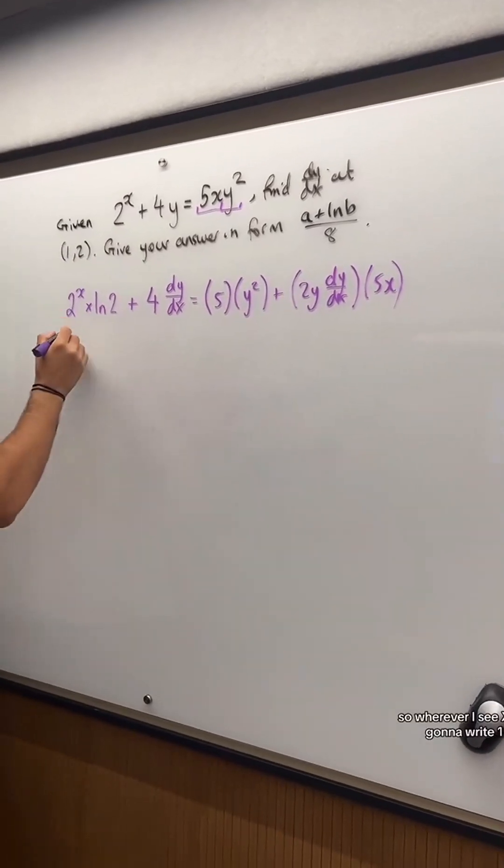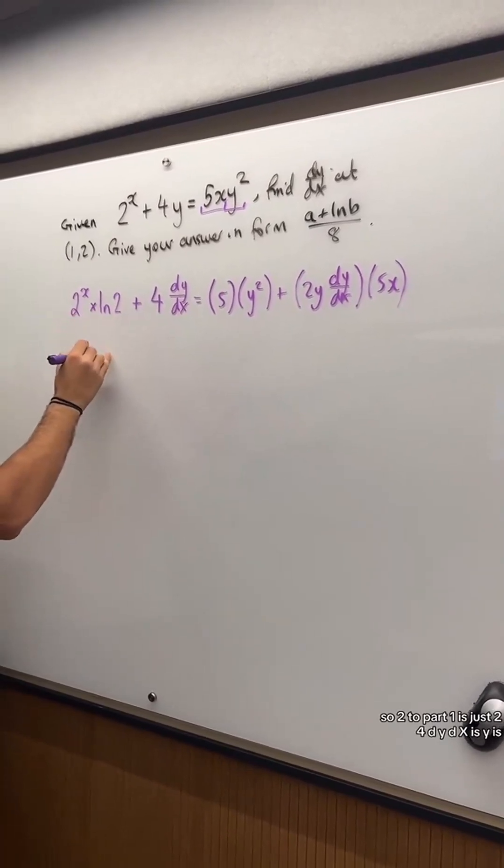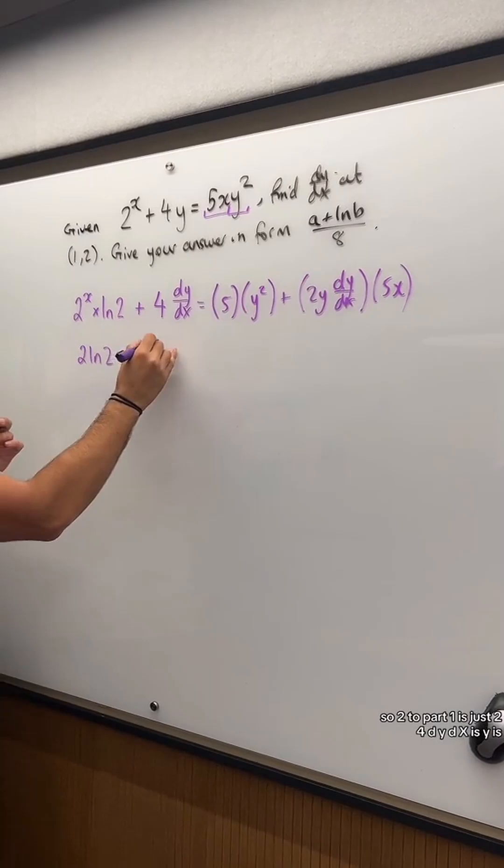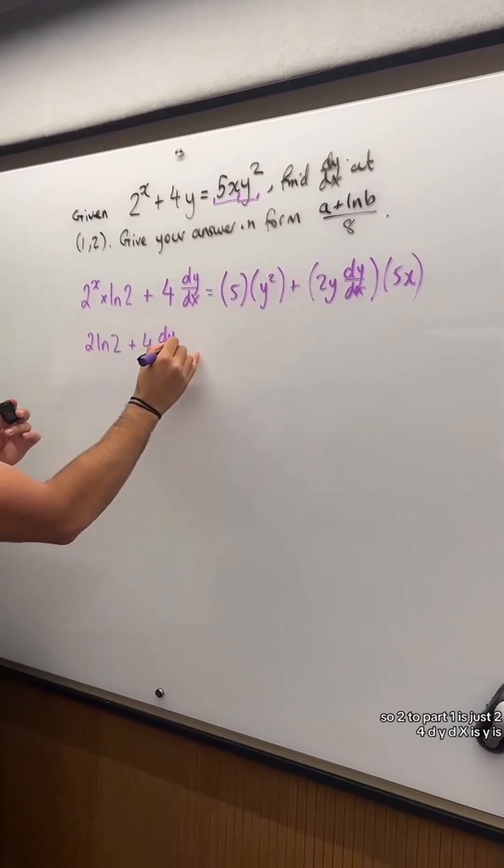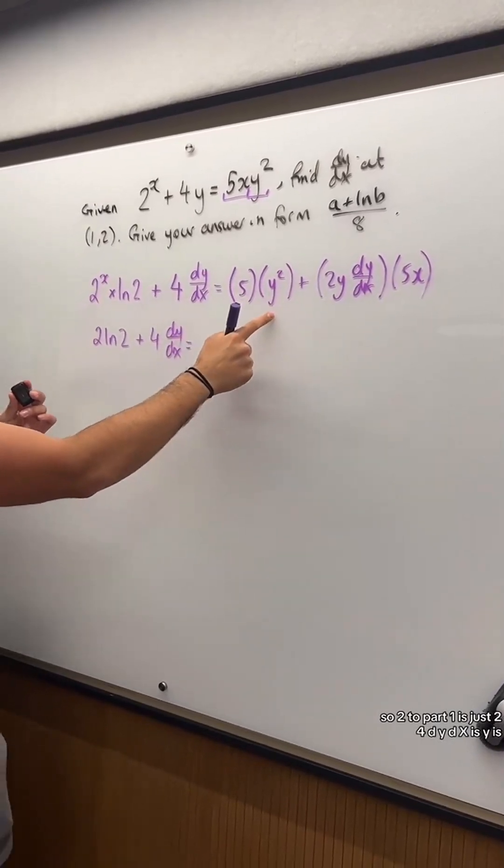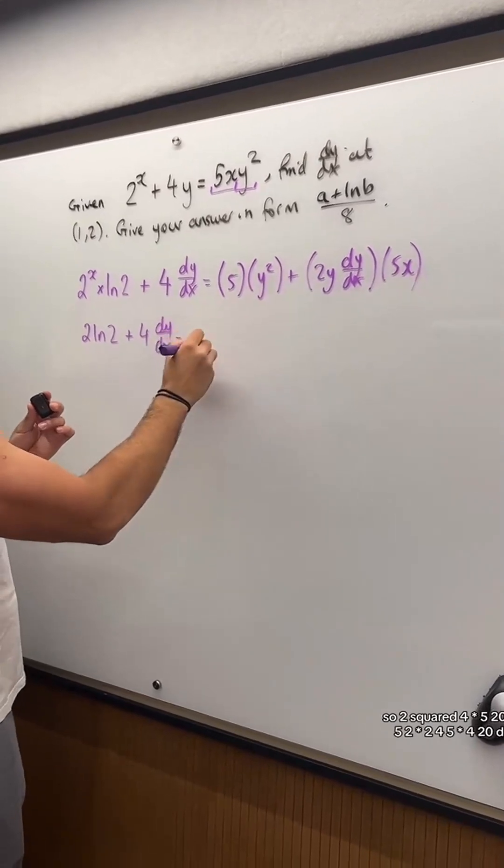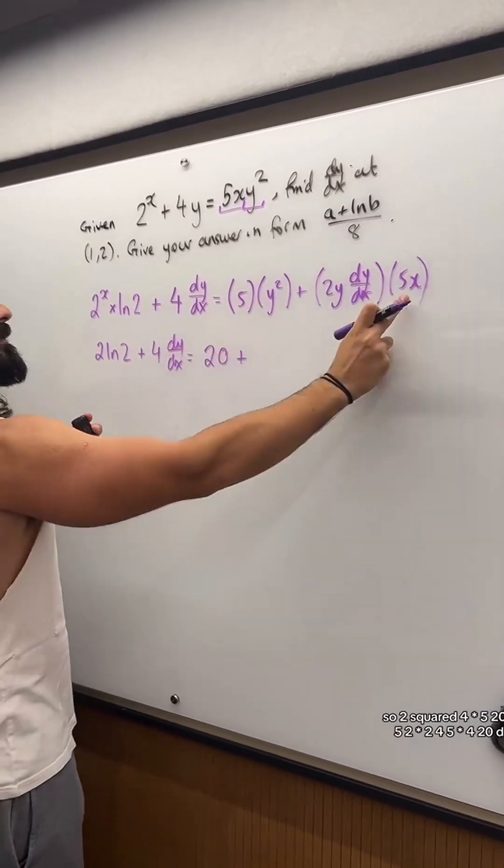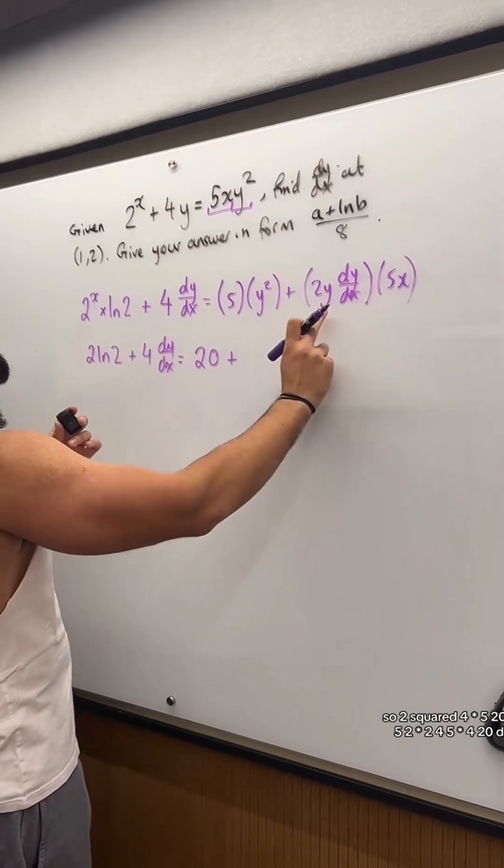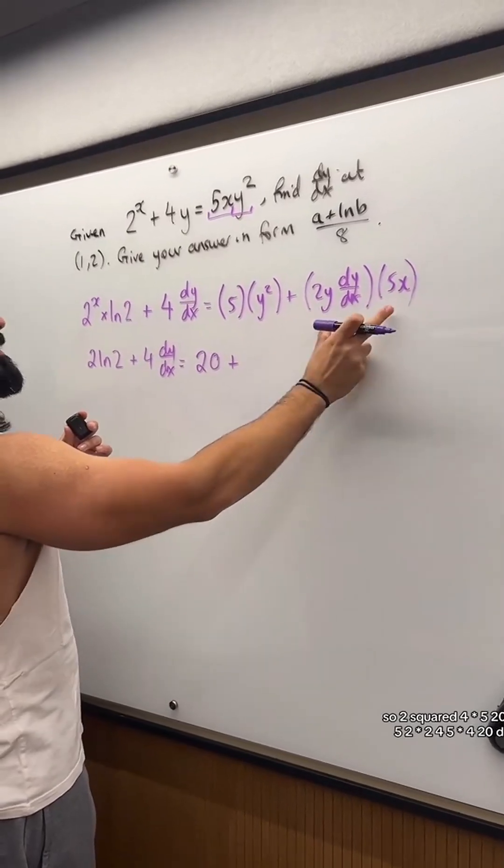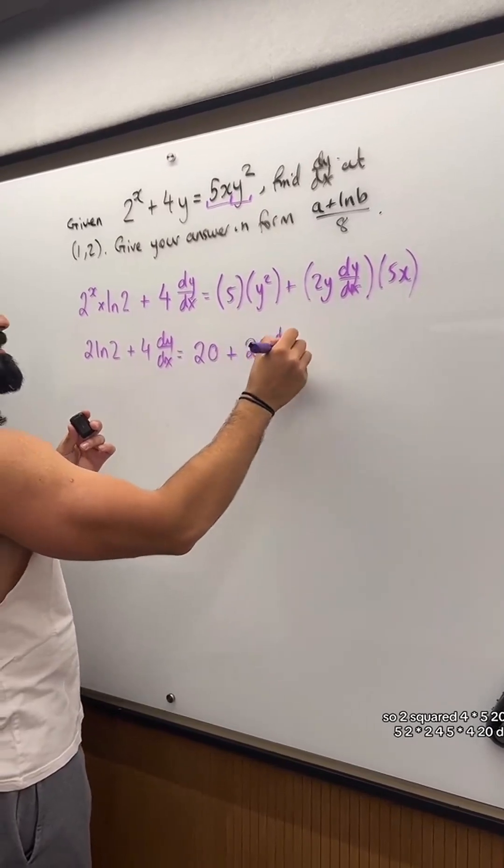So wherever I see x, I'm going to write 1. So 2 to the power of 1 is just 2, and then ln(2) plus 4 dy/dx. Y is 2, so 2 squared is 4 times 5, 20, plus 5 times 1, 5, 2 times 2, 4, 5 times 4, 20 dy/dx.